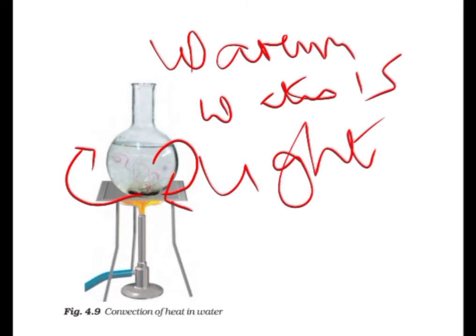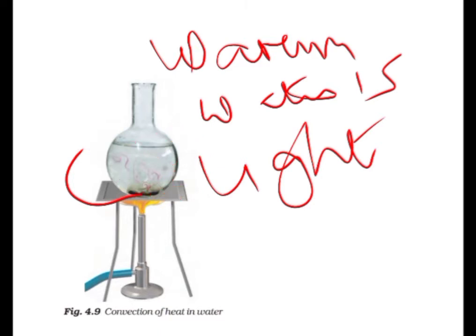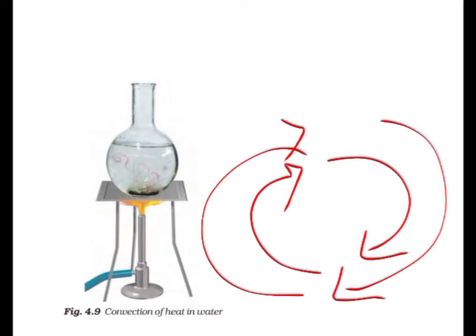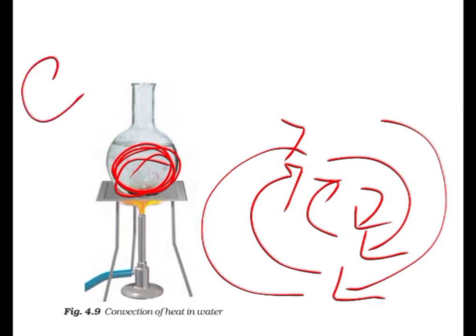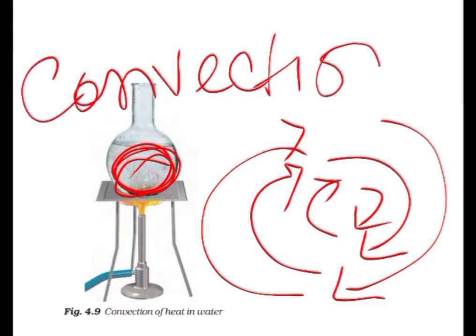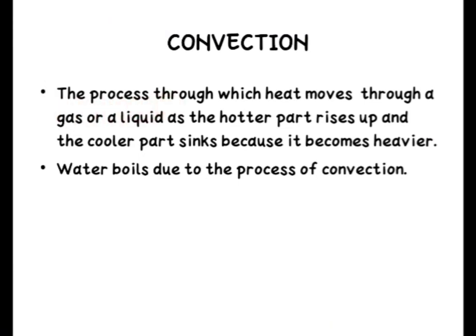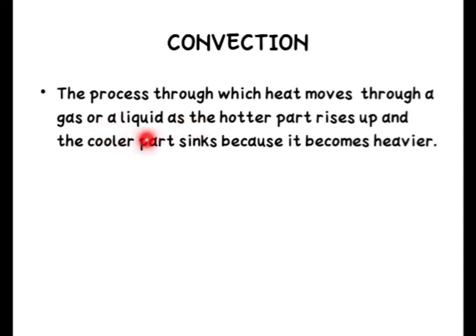Again, the cold water that comes down gets heated and rises up, while the water above cools and comes down. This cycle continues — warm water goes up, cold water comes down — repeatedly, until the entire water in the pot becomes heated. This process is known as convection. Heat moves through the liquid as the hotter part rises up and the cooler part sinks, because hot water is lighter and cold water is heavier.